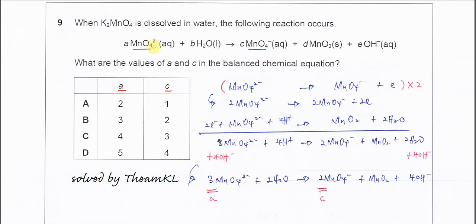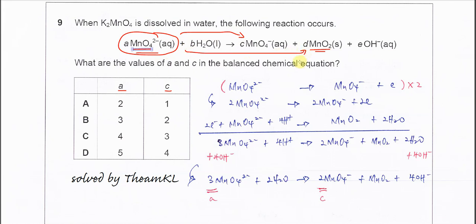After that, you have to take another pair for the second half-equation. The same reactant forms two products. So the second equation is: MnO₄²⁻ forms MnO₂. You balance the oxygens by adding H₂O — add 2H₂O on the right-hand side.